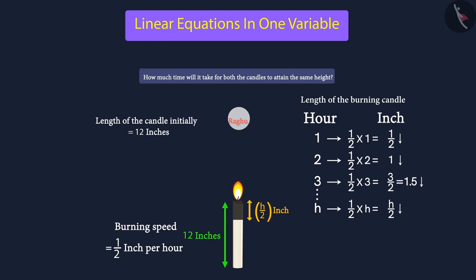Initially, Raghu's candle was 12 inches in length. So, we can say that after h hours, the length of the candle will be 12 inch minus one by two times h inch.